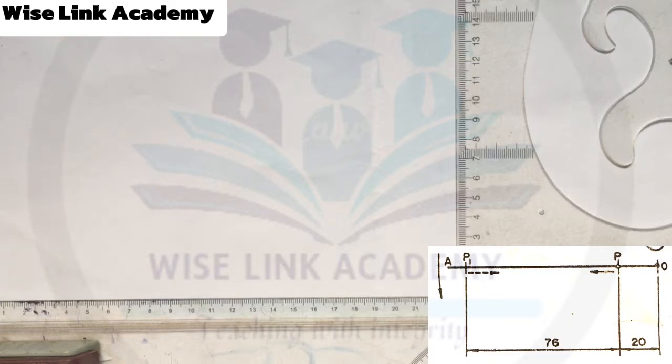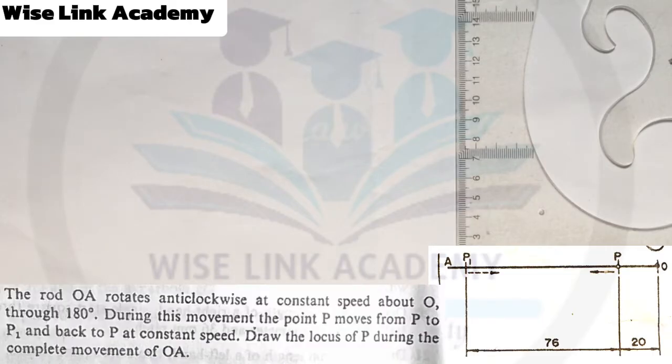The question says the rod OA rotates anti-clockwise at constant speed about O through 180 degrees. During the movement, the point P moves from P to P1 and back to P at constant speed.